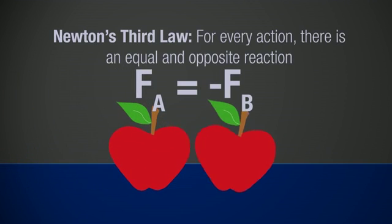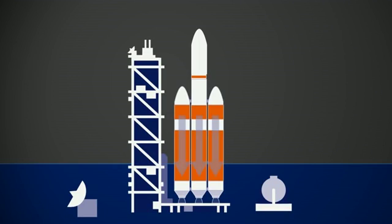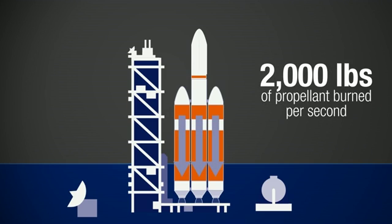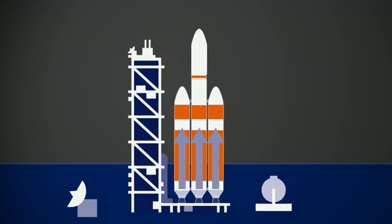For every action, there is an equal and opposite reaction. So when the rocket burns 2,000 pounds of propellant out of the engine per second, it pushes our rocket and our apple in the opposite direction.